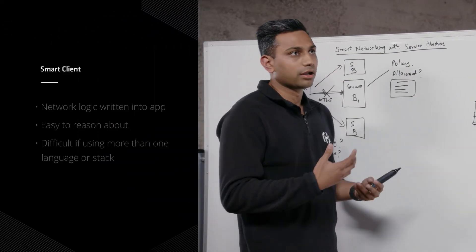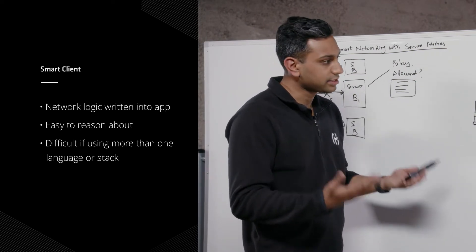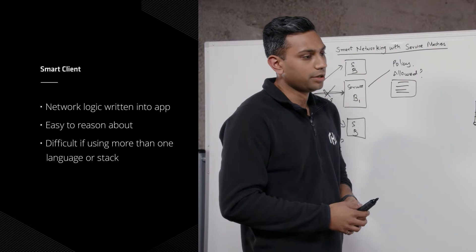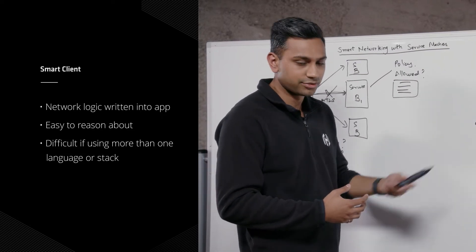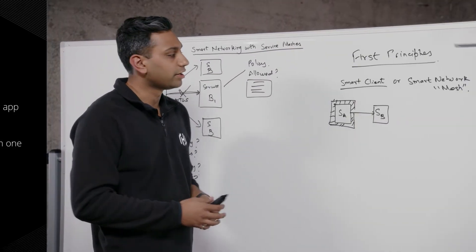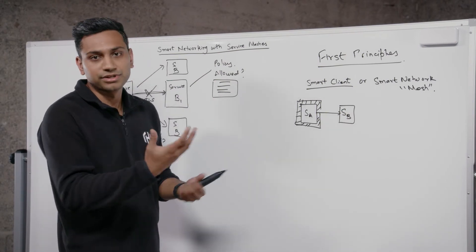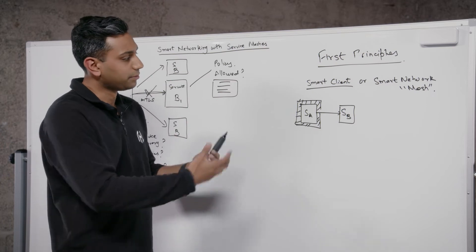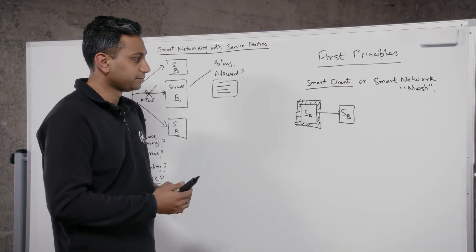A lot of companies have talked about this. One of the successful ones — Netflix — has talked about it pretty frequently. They've used libraries like Hystrix, Ribbon, and Eureka to achieve this service-to-service communication. These are libraries they share in the organization, and developers include them to get this smarts into the application.